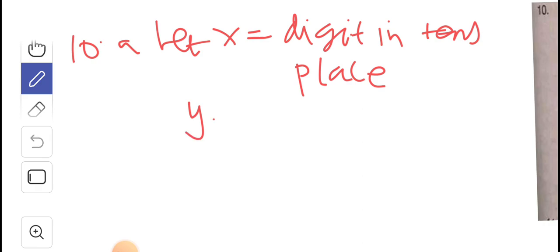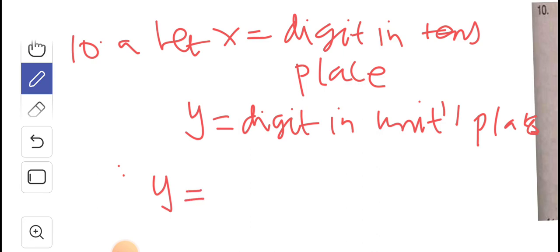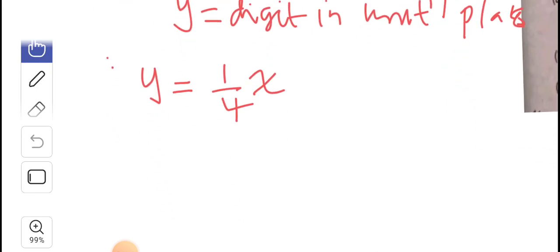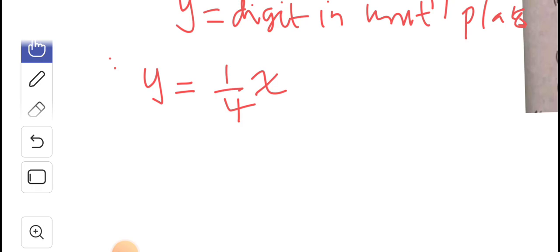Let y be equal to the digit in units place. Okay, and therefore, the digit in the units place is one-fourth of the digit in the tens place. So that is one of the equations there.